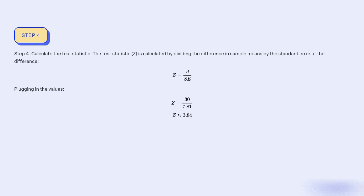Step 4: Calculate the test statistic. The test statistic Z is calculated by dividing the difference in sample means by the standard error of the difference: Z equals D divided by S_e. Plugging in the values: Z equals 30 divided by 7.81, giving Z equal to 3.84.